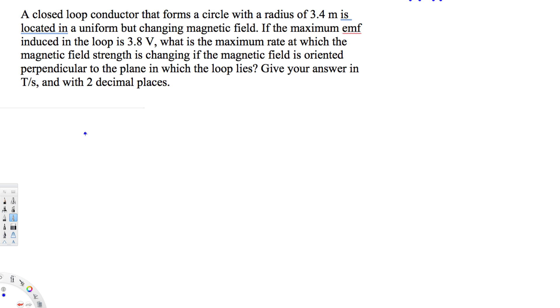What's going on guys, let's look at this problem right here. This question is asking: a closed loop conductor that forms a circle with a radius of 3.4 meters is located in a uniform but changing magnetic field. If the maximum emf induced in the loop is 3.8 volts, what is the maximum rate at which the magnetic field strength is changing if the magnetic field is oriented perpendicular to the plane in which the loop lies?